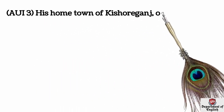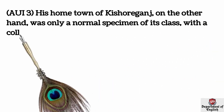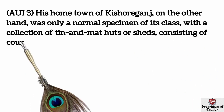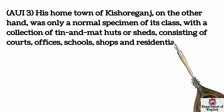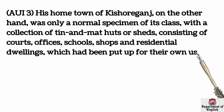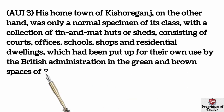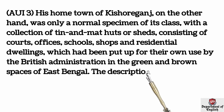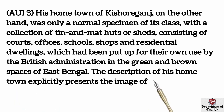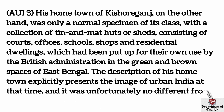Kishoreganj, on the other hand, was only a normal specimen of its class, with a collection of tin and mat huts or sheds consisting of courts, offices, schools, shops, and residential dwellings, which had been put up for their own use by the British administration in the green and brown spaces of East Bengal. The description of his hometown explicitly presents the image of urban India at that time, and it was unfortunately no different from rural India in any way.